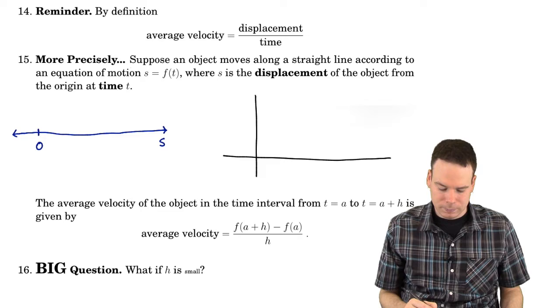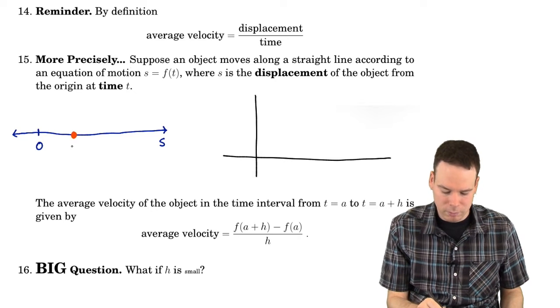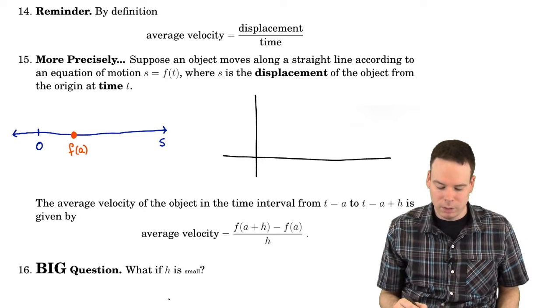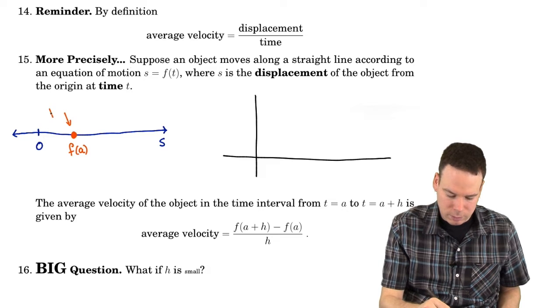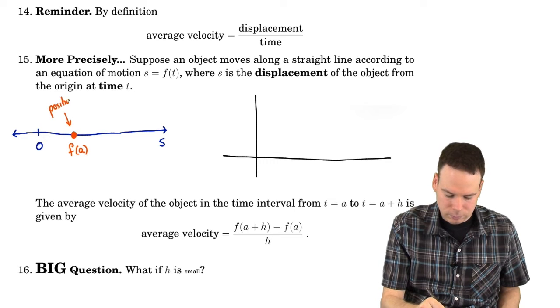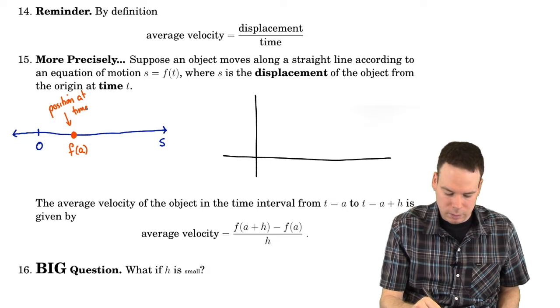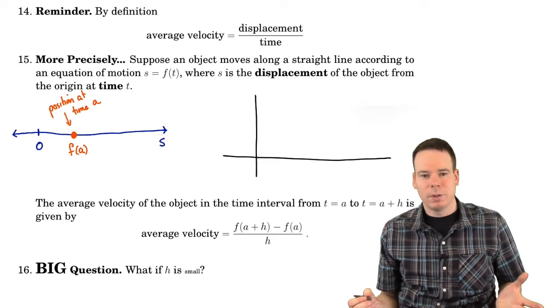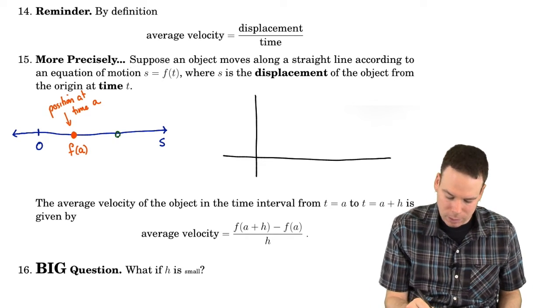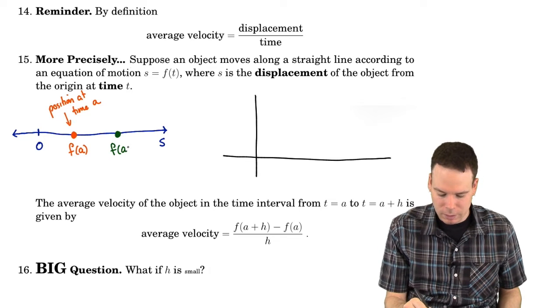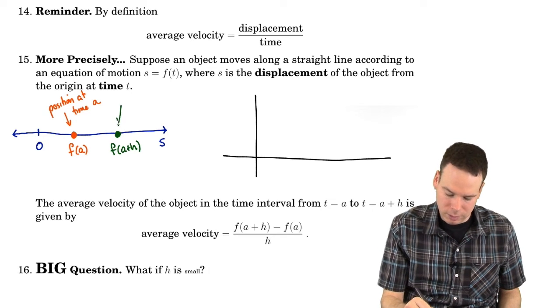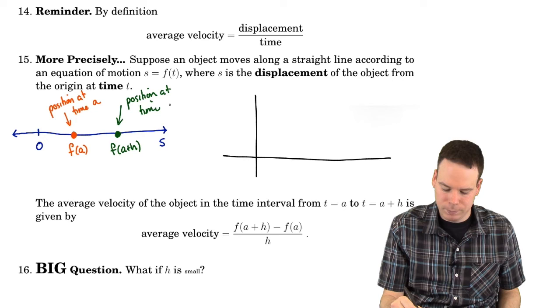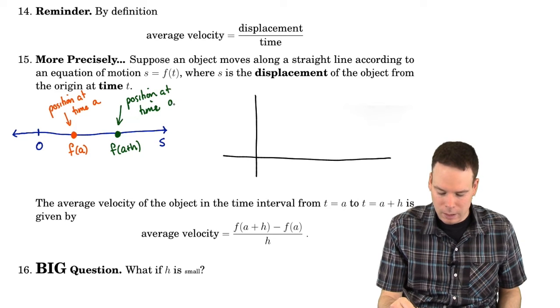What do we have? The particle at some time is somewhere. So maybe at time a, there's where the particle is. So that's our position at time a. What about a little bit later? Maybe h time units later. Maybe it's somewhere over here. That's f of a plus h. So that's the position at time a plus h.